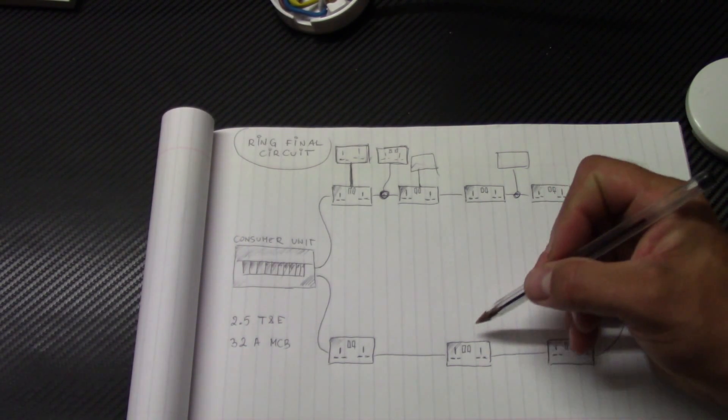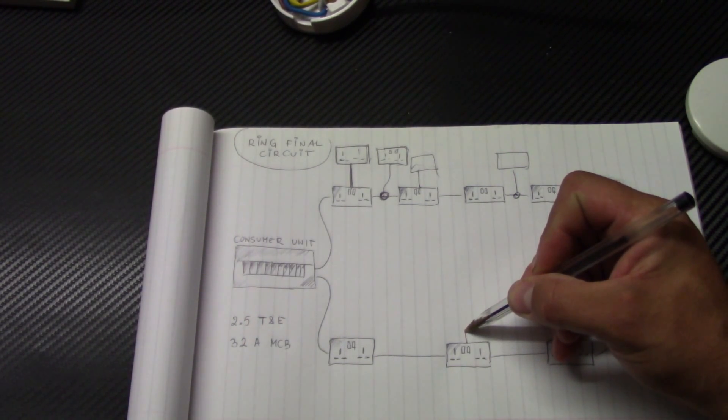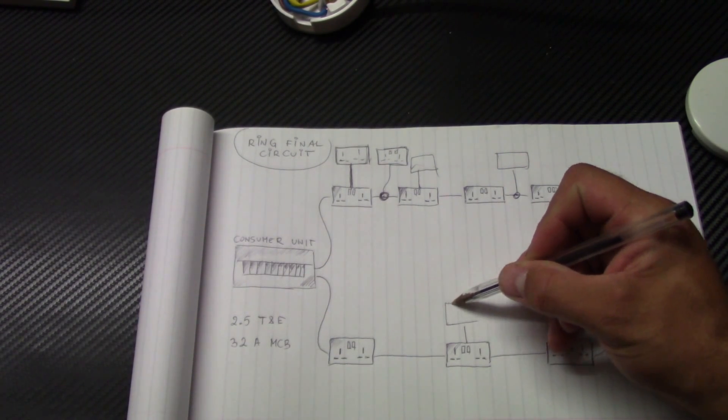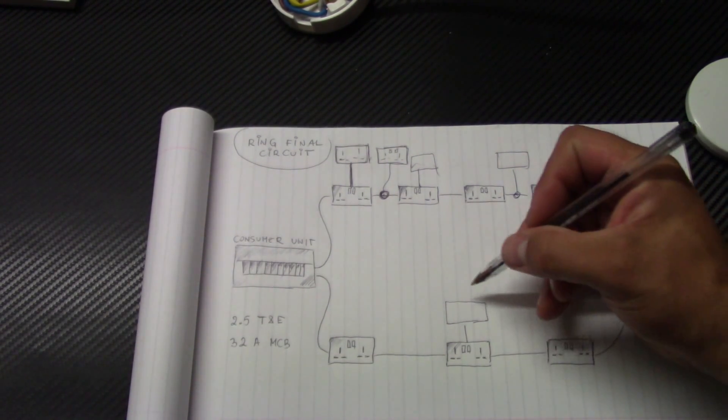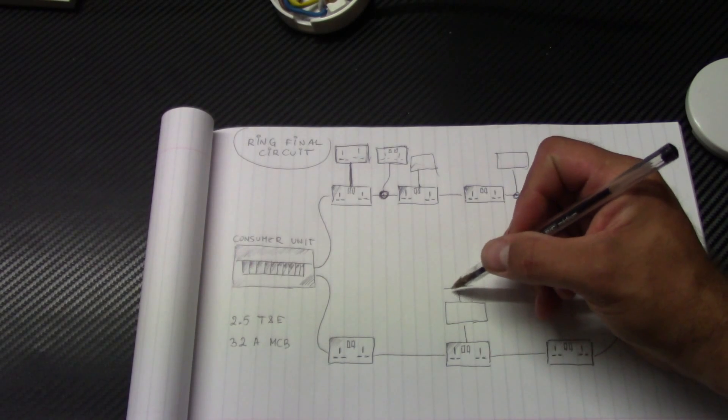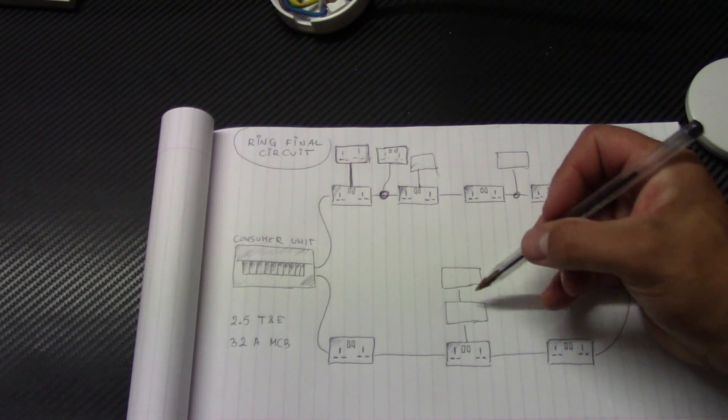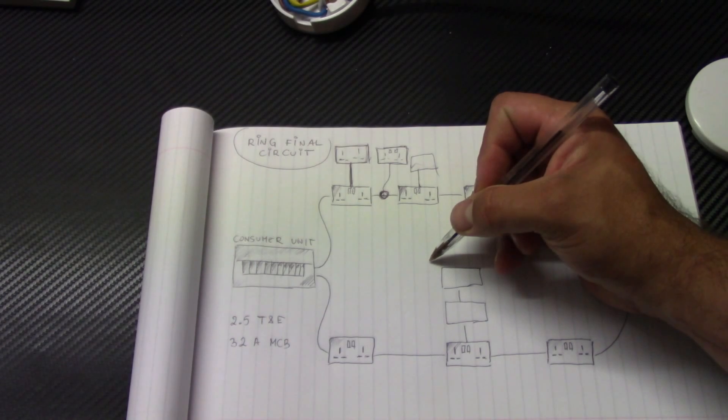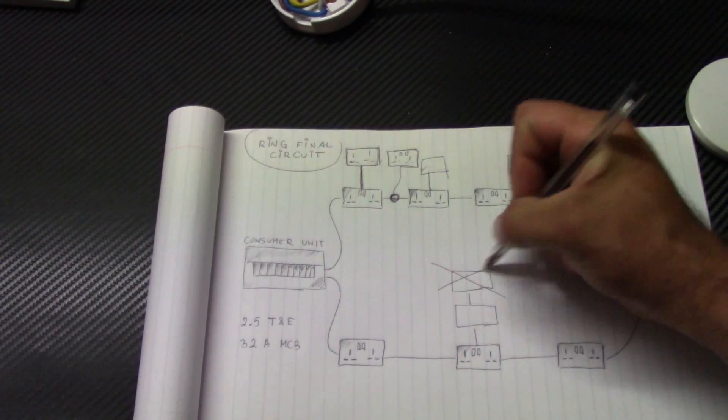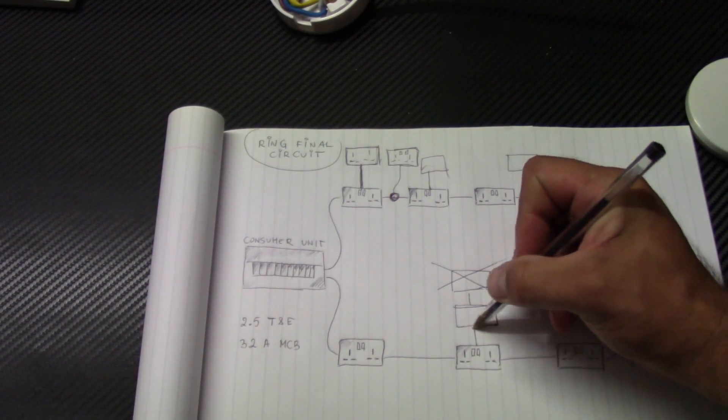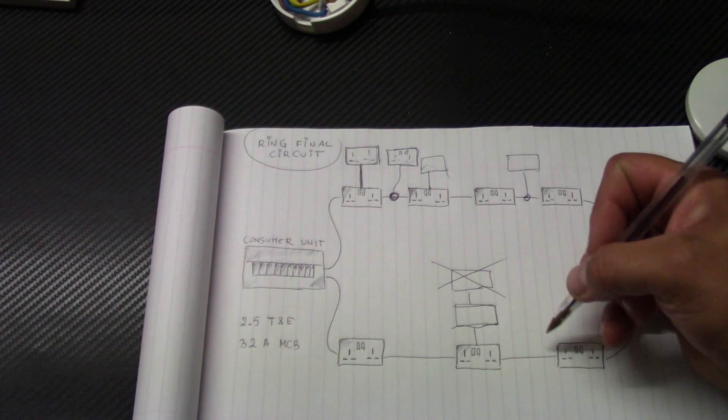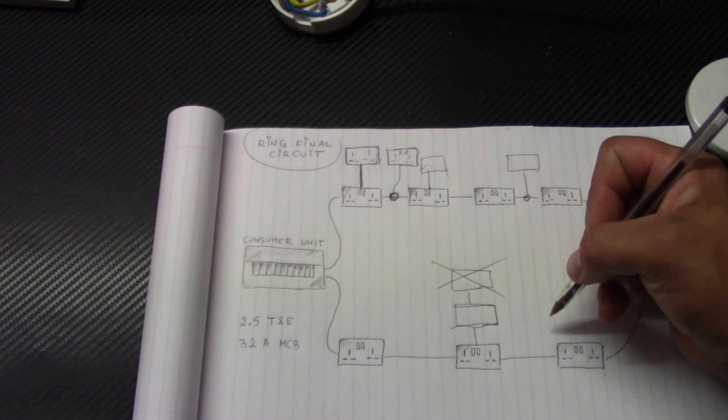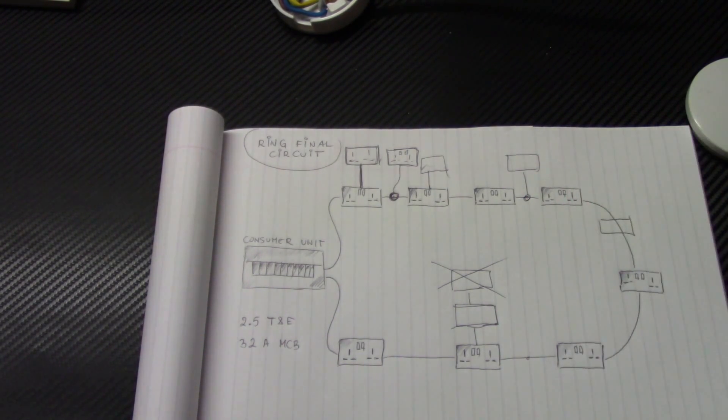One more very important thing. If you make a spare from the socket or from the junction box, you can't have another one just behind this one. This is wrong. This is against the regulations. You can have just one spare from one socket or one unfused spare from the junction box.